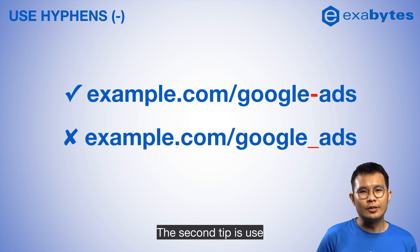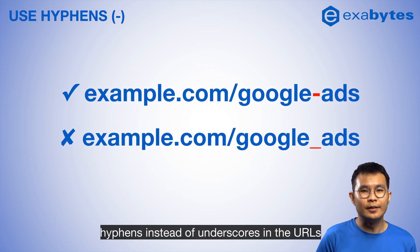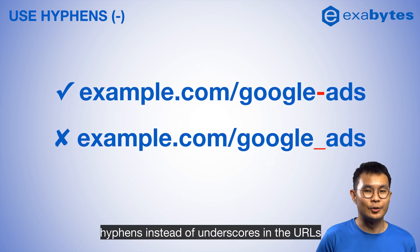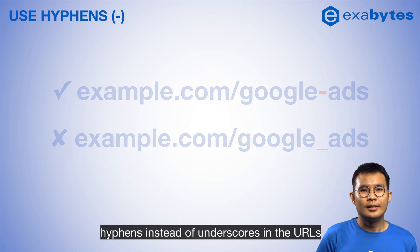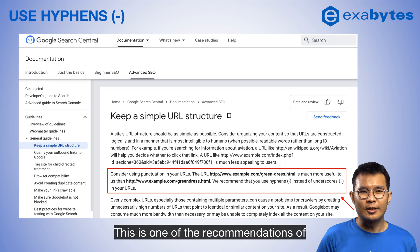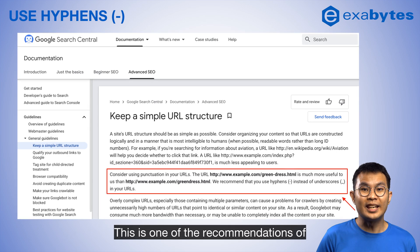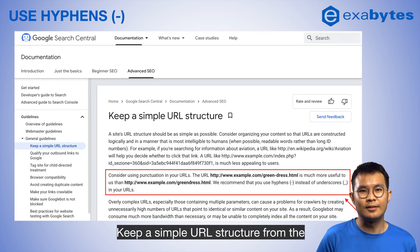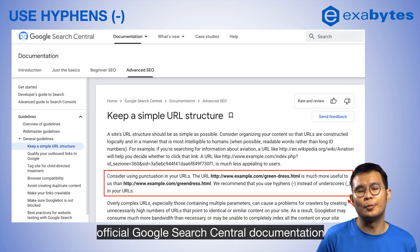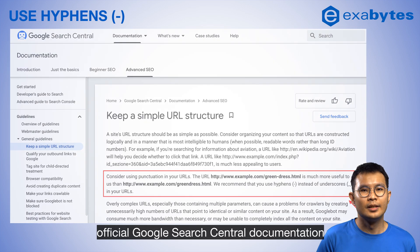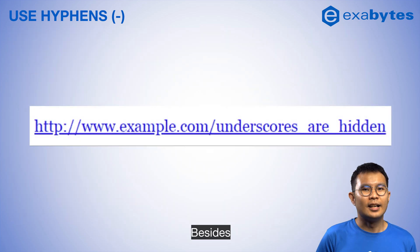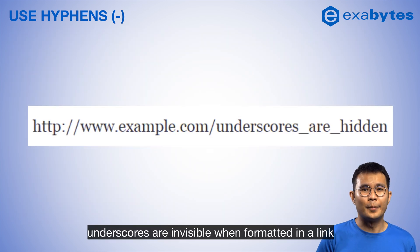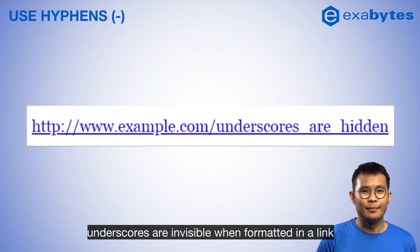The second tip is to use hyphens instead of underscores in the URL. This is one of the recommendations from the official Google Search Central documentation to keep a simple URL structure. Besides, underscores are invisible when formatted in a link.